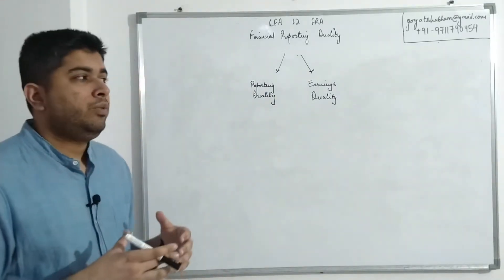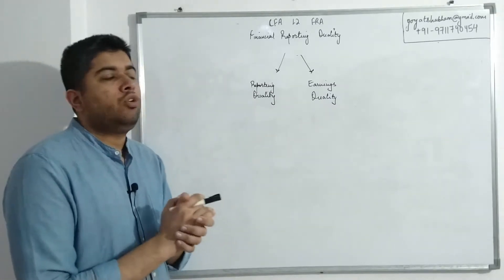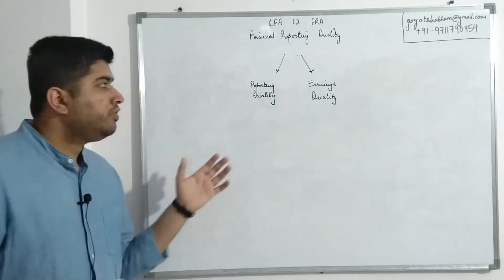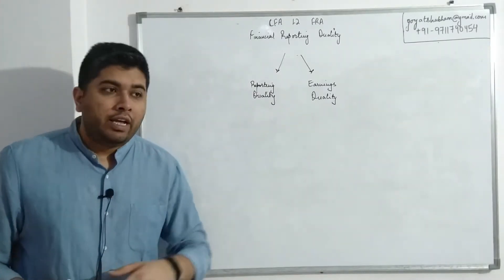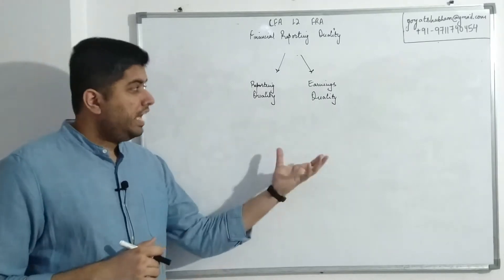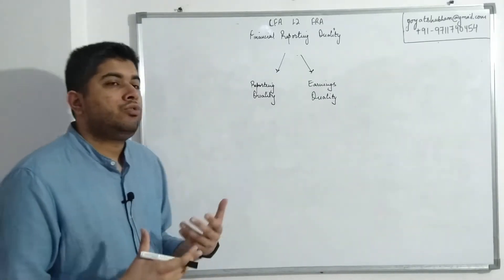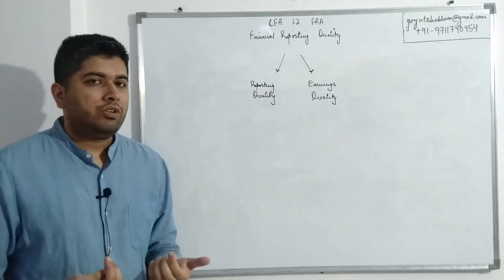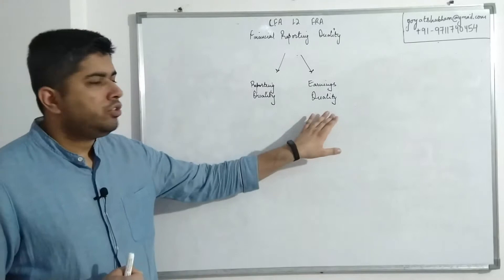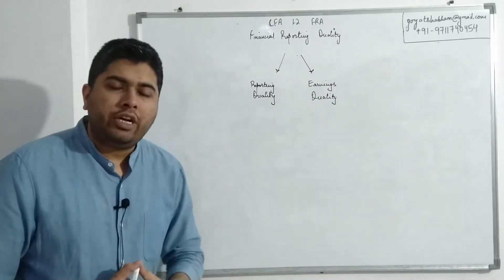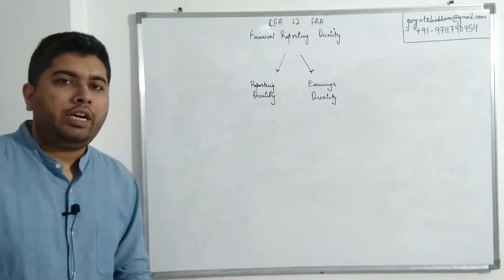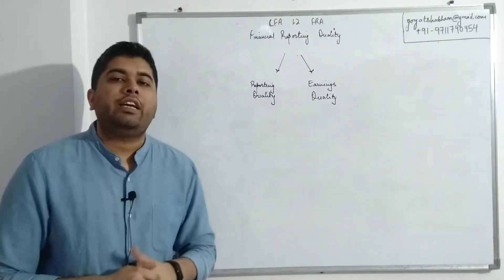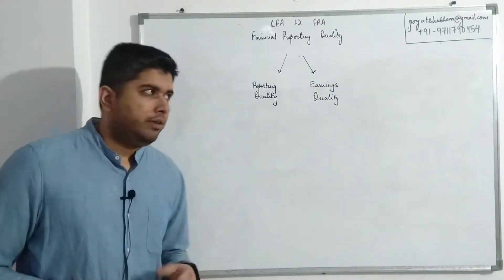Reporting quality is concerned with whether the information being reported follows all rules. Both aspects together make up financial reporting quality and they are highly interrelated. If a company has good earnings, I can only use those values in financial modeling or analysis if the company also has good reporting quality. If the company doesn't have good reporting quality, I'll never be sure whether the earnings they report are actually accurate — so both must work in tandem.